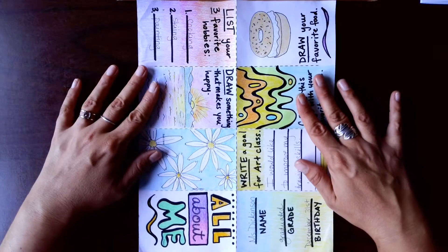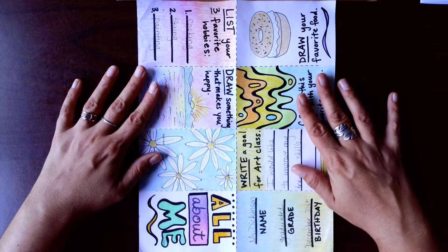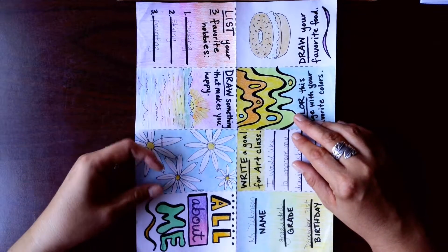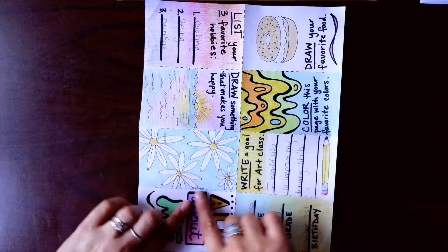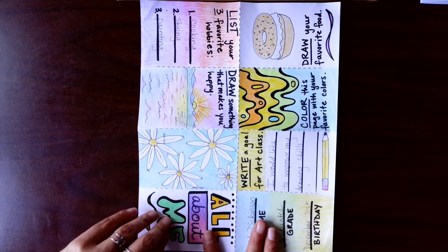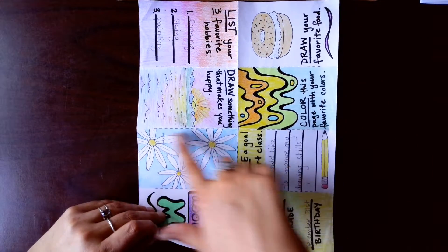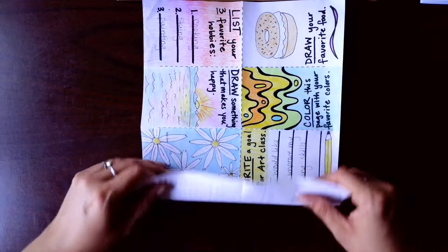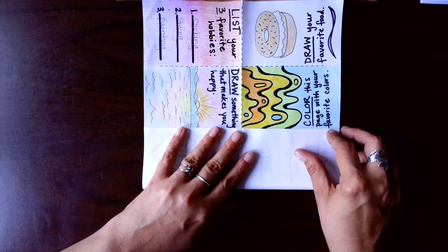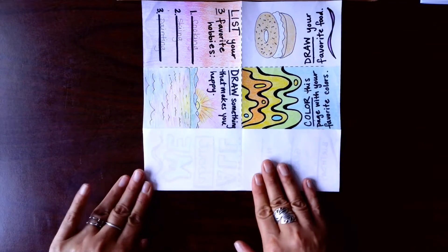Open it back up and we want to fold these two spaces up to meet that center fold. So I'm going to fold it up just like this to line up in the center. Then I'm going to flip it around.